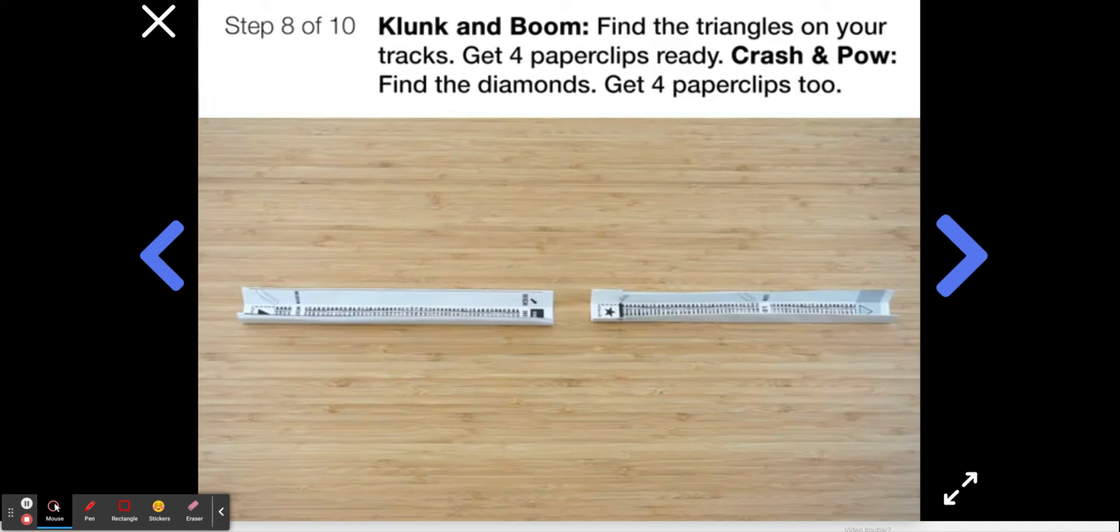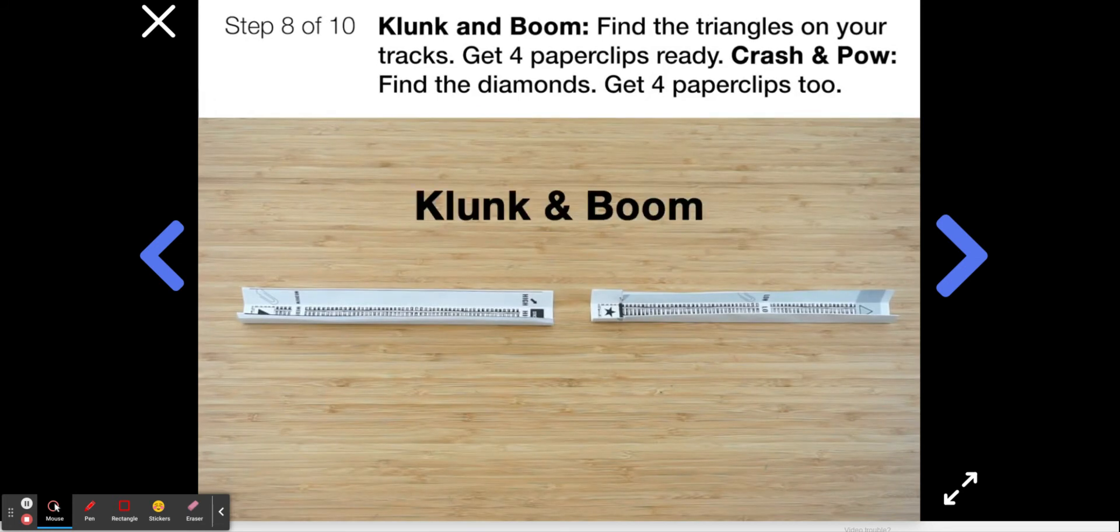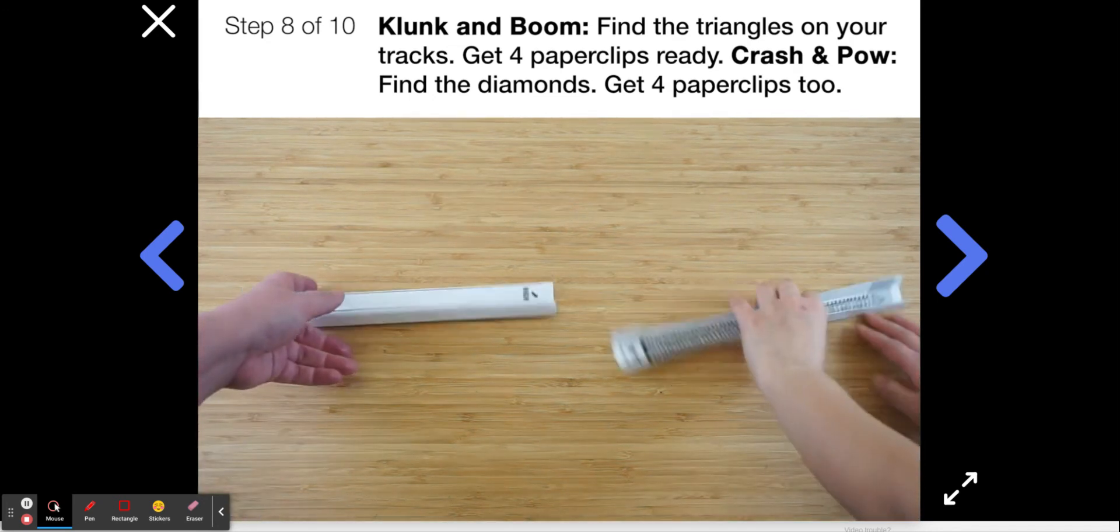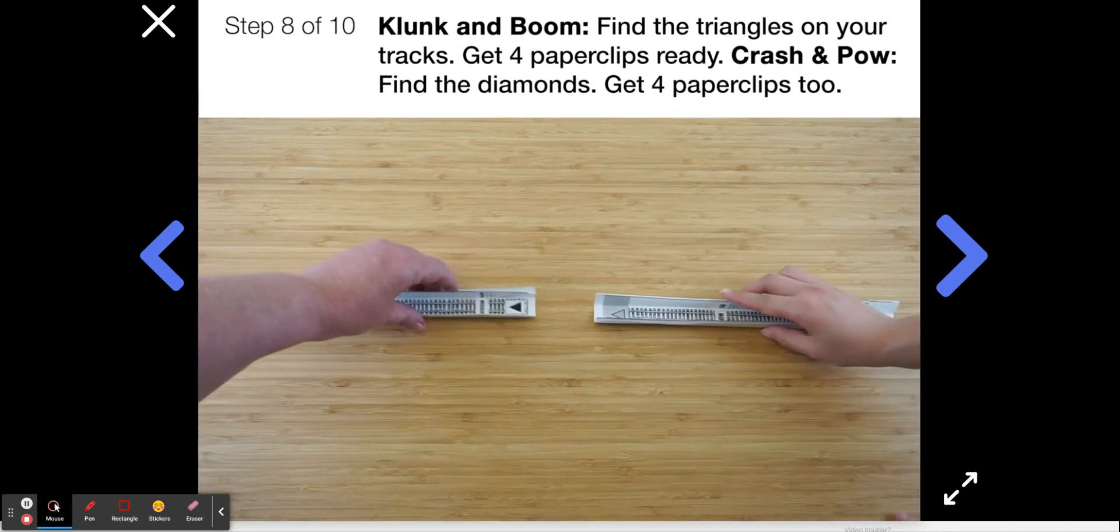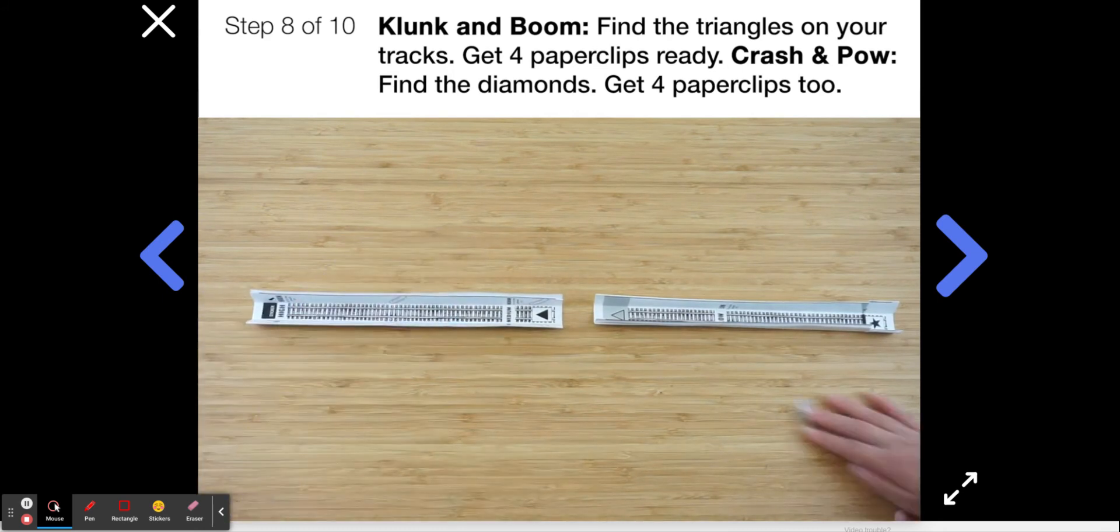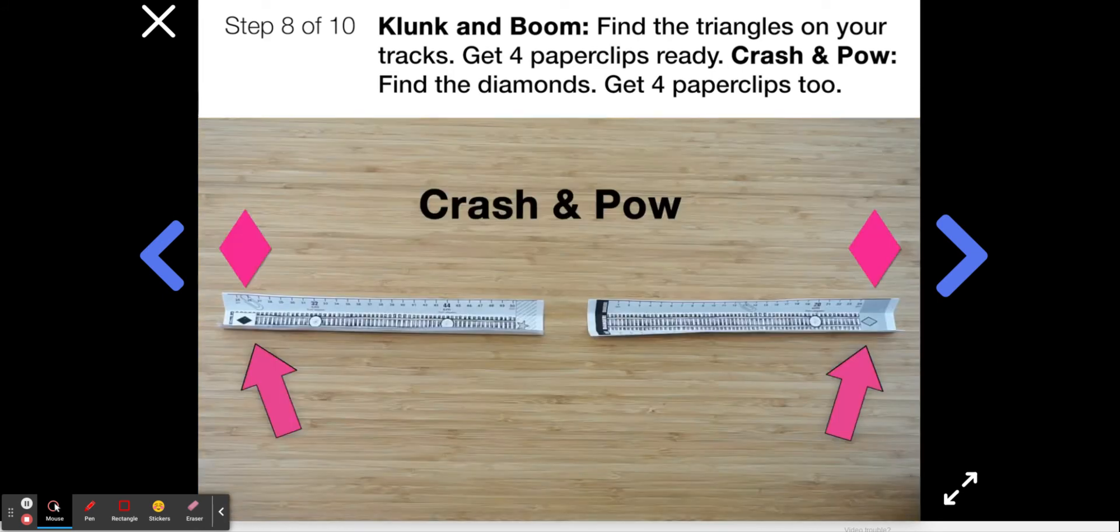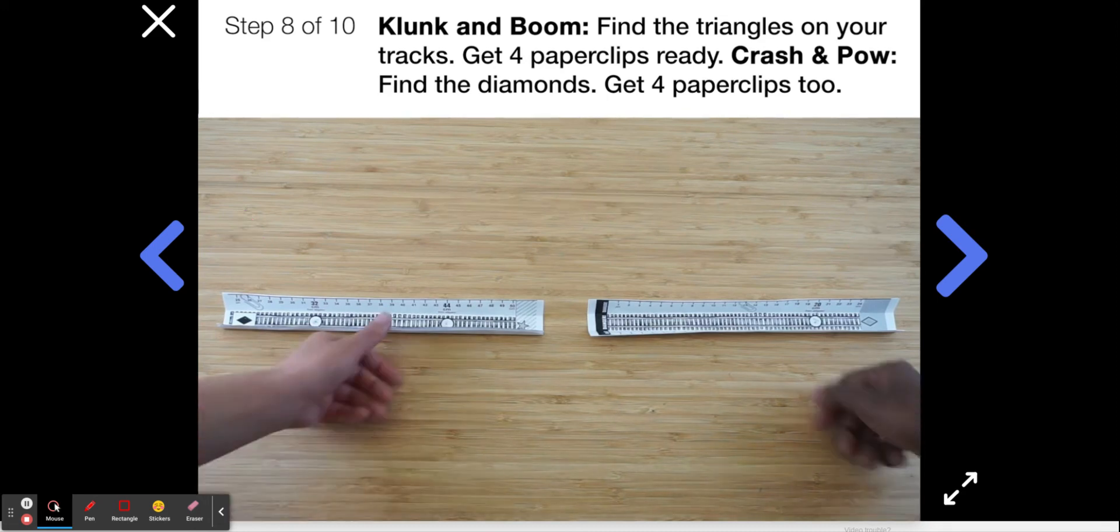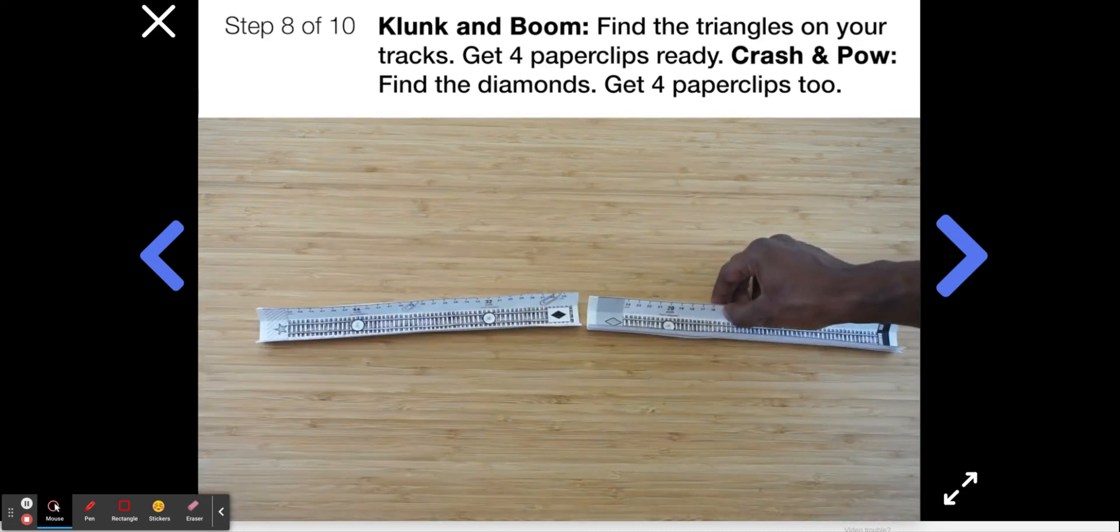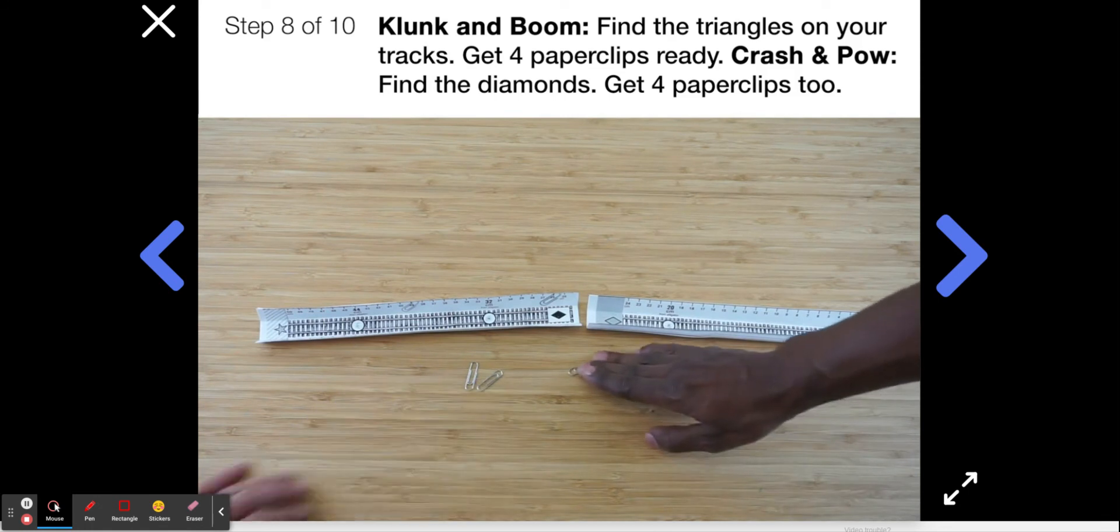Now it's time to start combining your track pieces. Clunk and boom, you'll want to find the triangles at the end of your tracks and put them near each other, like this. Then get four paperclips ready. Crash and pow, you'll look for the diamonds on your tracks. Put them near each other, like this, then you'll get four paperclips ready as well.